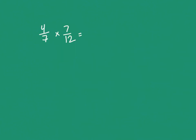Let's practice one more, and I want to point out that it's not always possible to cross reduce — sometimes you can, sometimes you can't, but I always check. If you can, it makes multiplication easier. Here I have four and twelve on one cross: four divides into four once and into twelve three times. The other cross is seven and seven — seven goes into both, making it super easy: once and once. One times one is one, one times three is three. Answer is one-third.